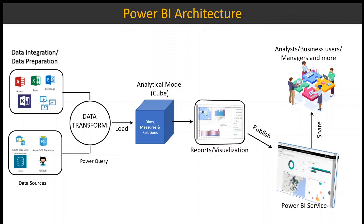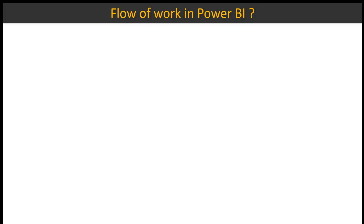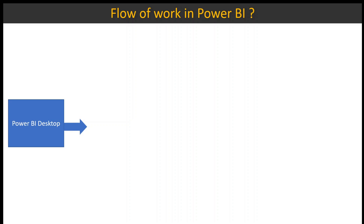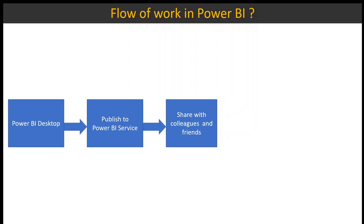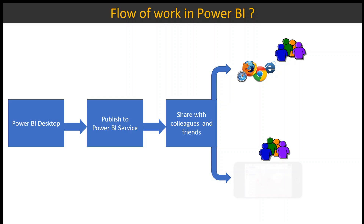The key components in the flow are: data sources, then data transformation via Power Query, then data modeling. The typical workflow is: start with Power BI Desktop — download, install, and open it — get the data, transform and prepare it, create your reports, then publish to Power BI Service. Once published, share with colleagues, friends, or external people, and they can view the reports through browsers or mobile devices.